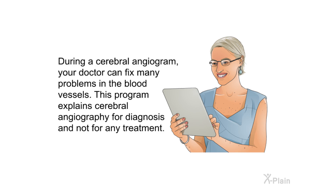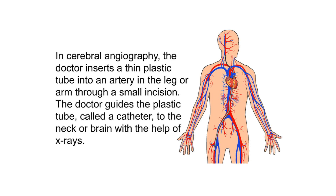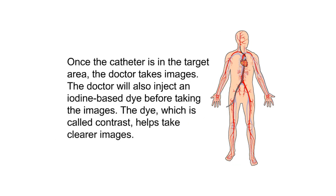In cerebral angiography, the doctor inserts a thin plastic tube into an artery in the leg or arm through a small incision. The doctor guides the plastic tube, called a catheter, to the neck or brain with the help of x-rays. Once the catheter is in the target area, the doctor takes images. The doctor will also inject an iodine-based dye before taking the images; the dye, which is called contrast, helps take clearer images.